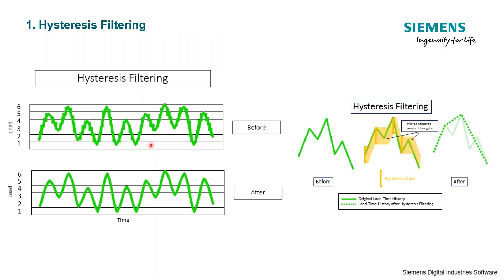The first step is hysteresis filtering. We define an amplitude gate — something like this hysteresis gate — and we slide it from left to right across our time history. Any variation that is smaller than this hysteresis gate is removed from our load time history. So if we have a little fluctuation that is smaller than our gate, we remove it from our time data. Small fluctuations don't really contribute to damage, so we get rid of them. You can adjust the hysteresis gate; if you want to skip this step, you can set it to zero. The result is a slightly smoother time history.